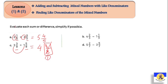So 8/8 becomes 1. That 1 gets added to the whole number 4, giving us the answer: 5. So whenever you find a fraction where numerator equals denominator — like 8/8 — replace it with 1, then add that 1 to the whole number. The answer becomes 5.